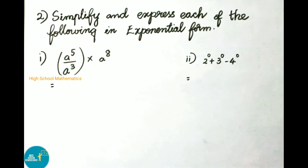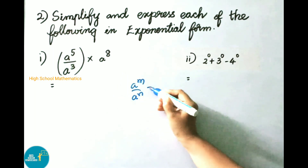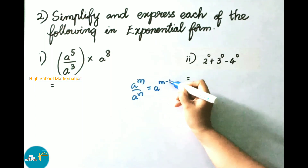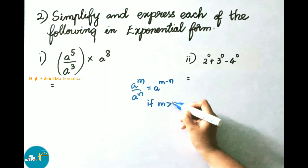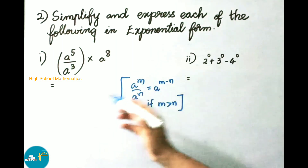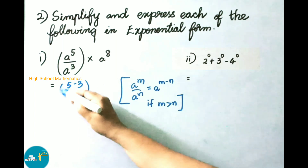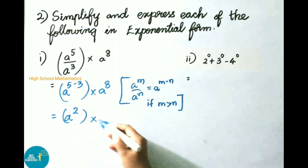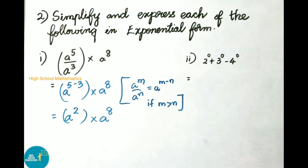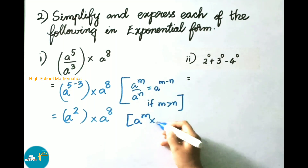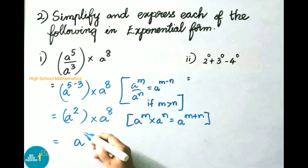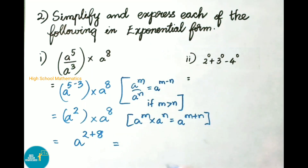A power 5 by a power 3: here m value is 5 which is greater than n value 3, so the formula is a power m minus n. Using this formula, a power 5 by a power 3 equals a power 5 minus 3, which is a power 2. Then a power 2 into a power 8 is looking like a power m into a power n equals a power m plus n. So a power 2 plus 8 equals a power 10. The answer is a power 10.